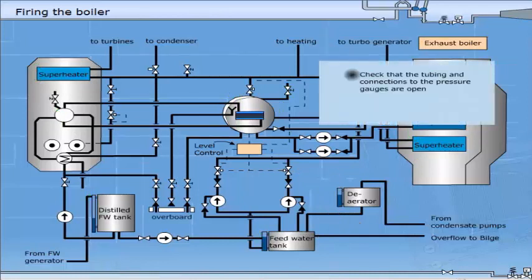Check that the tubing and connections to the pressure gauges are open by blowing through. The tube must be full of condensate all the time. Check the water level and refill if necessary. Use both auxiliary and main feed water line for testing.